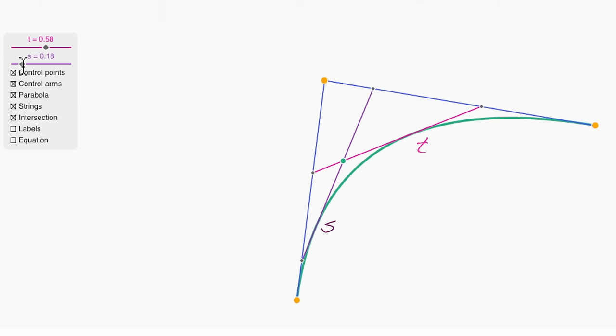What I'm going to do is write down an expression for this intersection point here, this green point. Now, why would I do that? Well, the reason is, watch what happens as s and t get closer and closer together.